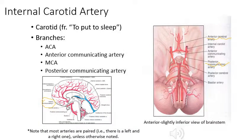One of the main blood suppliers to the brain is the internal carotid artery, because it branches off to form the middle cerebral artery, the anterior cerebral artery, and also the posterior communicating artery.